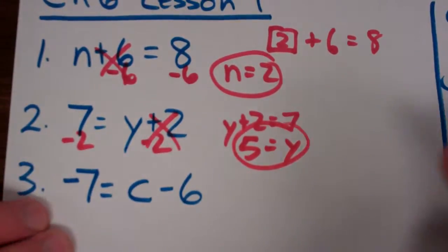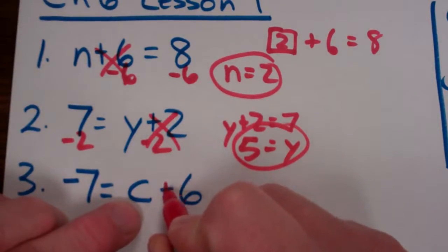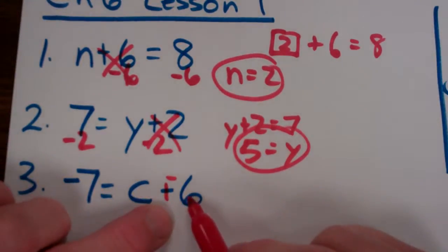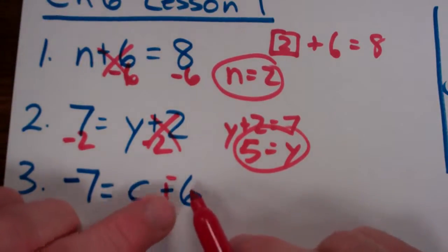Next one, I do have a subtraction, so I'm just going to get started by doing leave, change, opposite, distribute your property, combine like terms. Once again, don't need any of that stuff, but I see that there was one thing done to this c. They added a negative 6. What's the opposite?